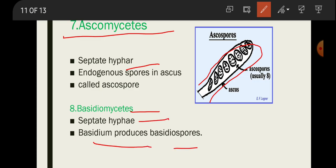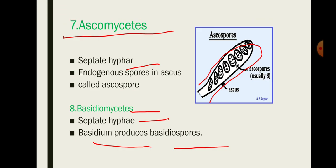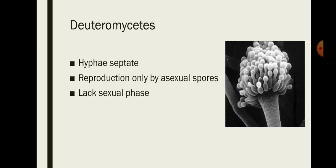The next subclass is Basidiomycetes. Septate hyphae are present here as well. The basidium is a structure that produces basidiospores, just as the ascus produces ascospores. So in fungi, the ascus produces ascospores and the basidium produces basidiospores.